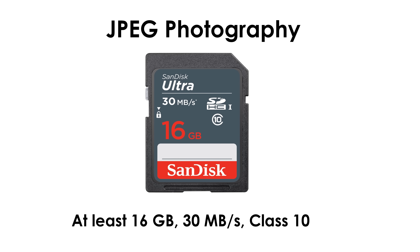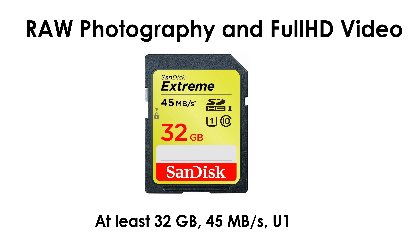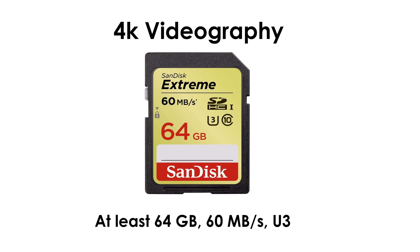For JPEG photography, go with an at least 16GB Class 10, 30MB per second card. For RAW photography and Full HD videography, go with an at least 32GB U1, 45MB per second card. For 4K videography, go with an at least 64GB U3, 60MB per second card.